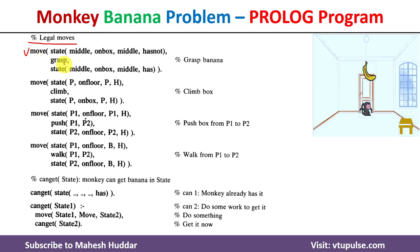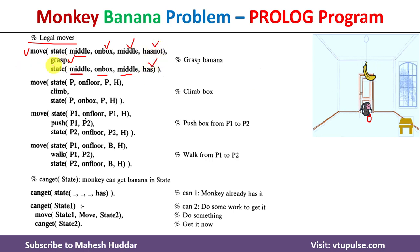The first legal move is grasp. To execute a grasp, the monkey should be present at the middle, that is exactly at the center. It should be present on the top of the box, the box should be at the middle, and the monkey should not have the banana. If all these conditions are satisfied, grasp will be executed successfully. Then the monkey will be at the middle, on top of the box, the box at the middle — and previously the monkey was not having the banana, but now the monkey has the banana.